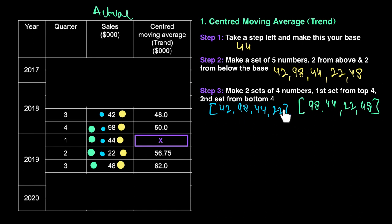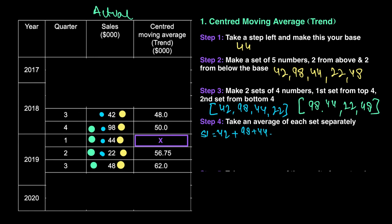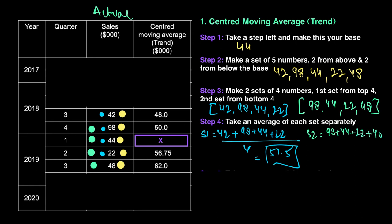Step four: take an average of each set separately. For set one: (42 + 98 + 44 + 22) ÷ 4 = 51.5. For set two: (98 + 44 + 22 + 48) ÷ 4 = 53. So we now have two numbers to focus on: 51.5 and 53.